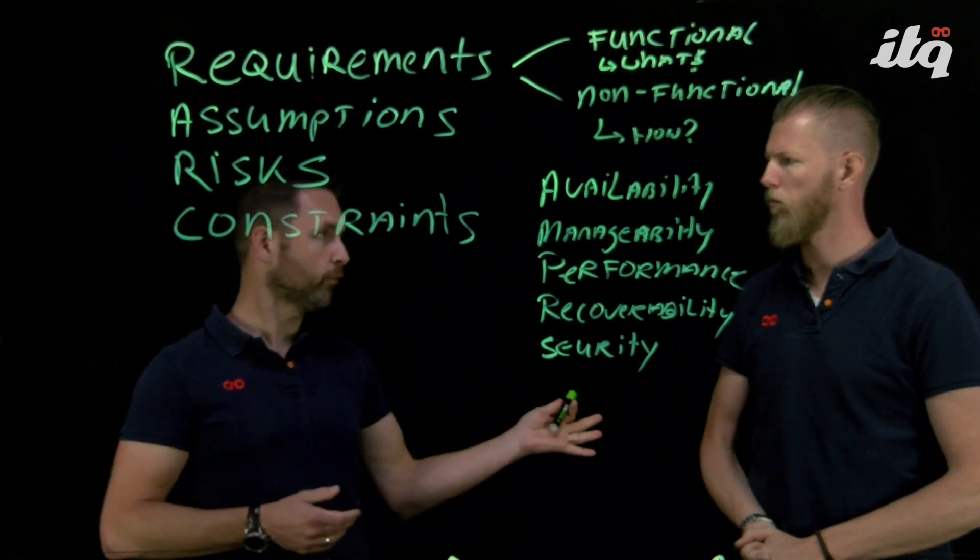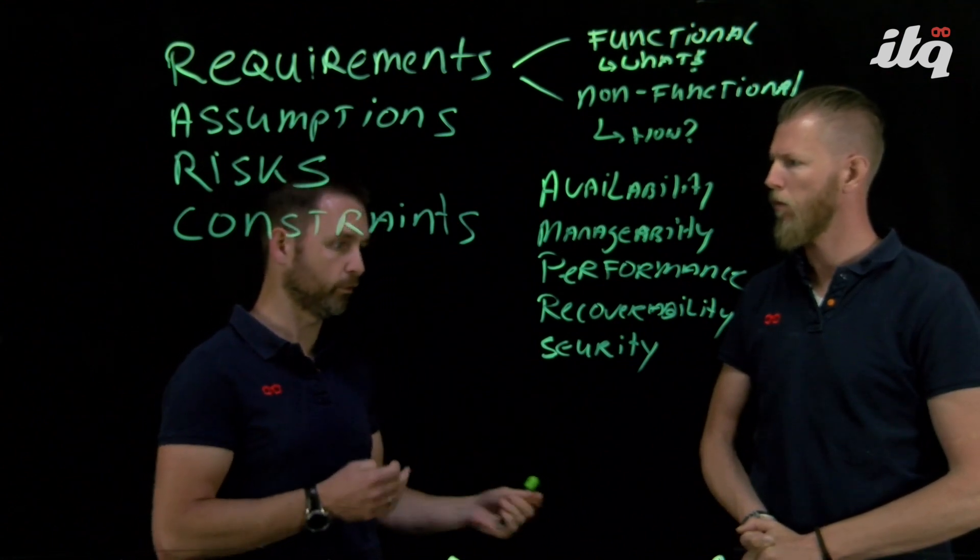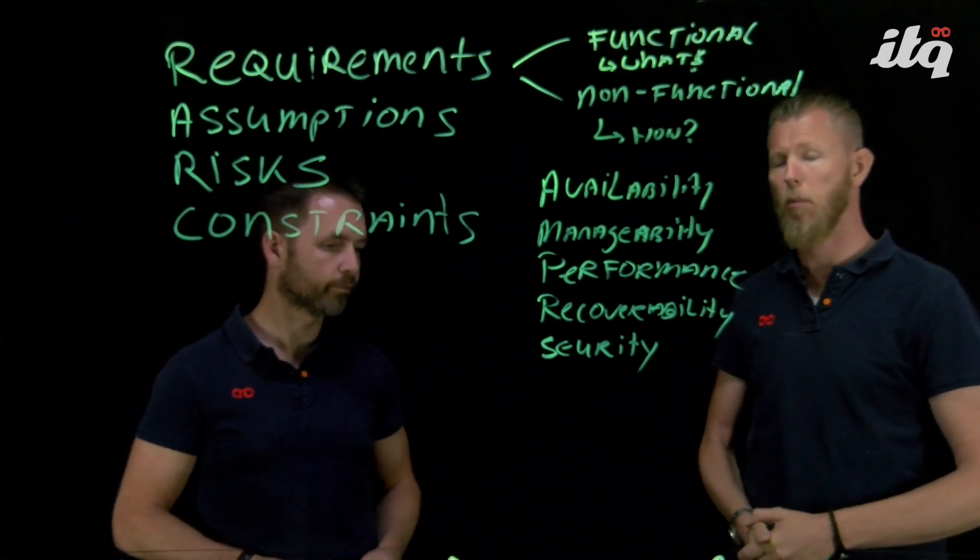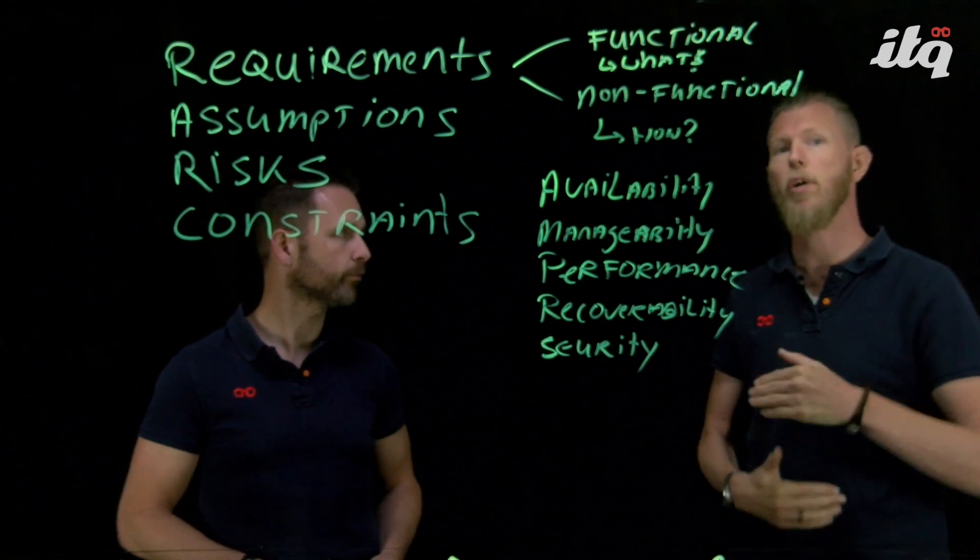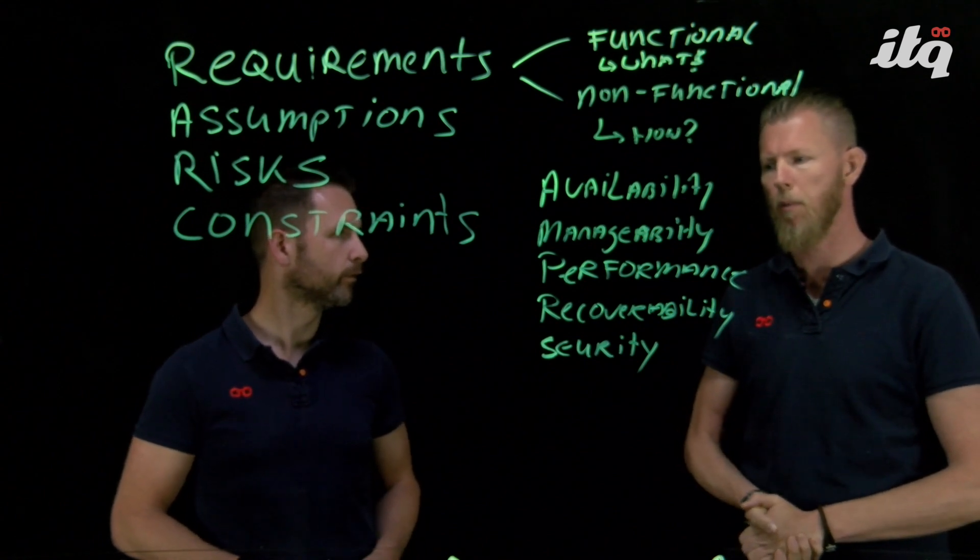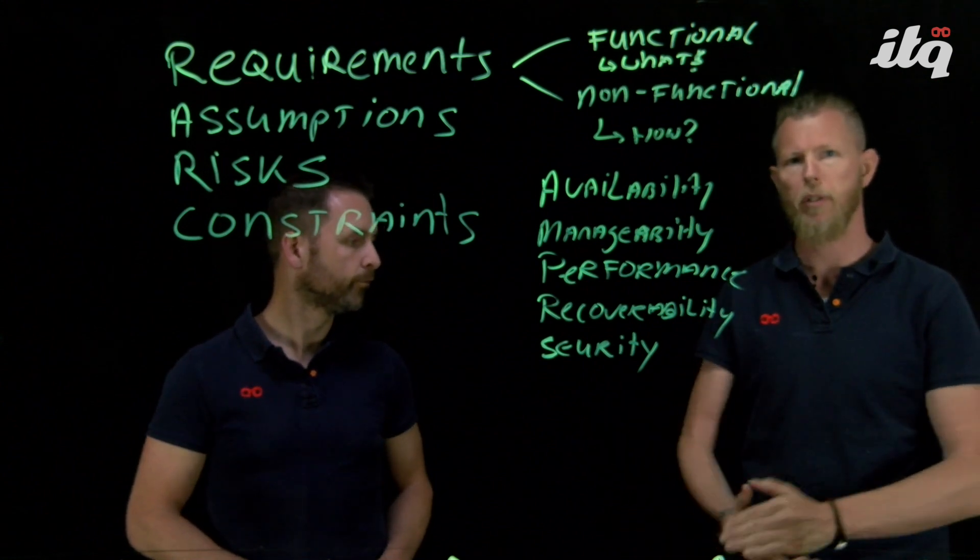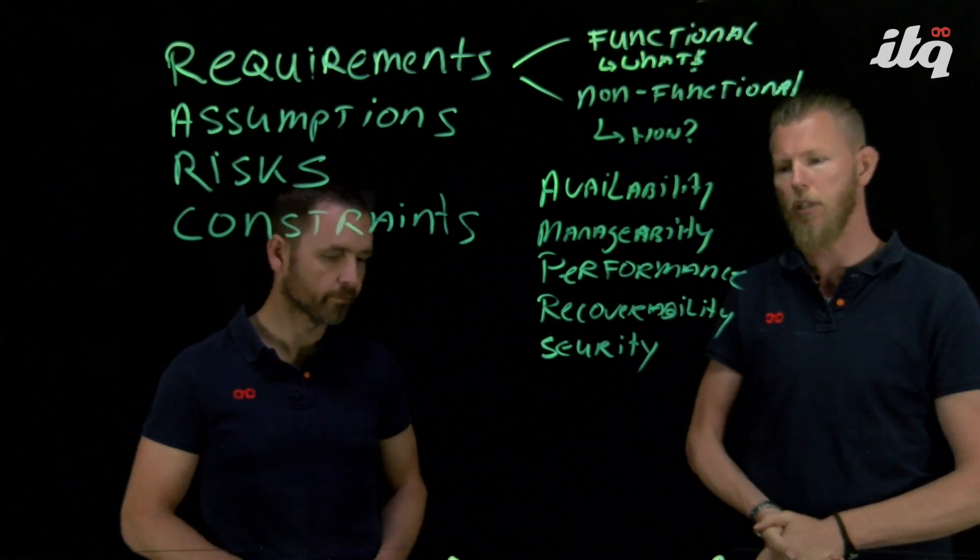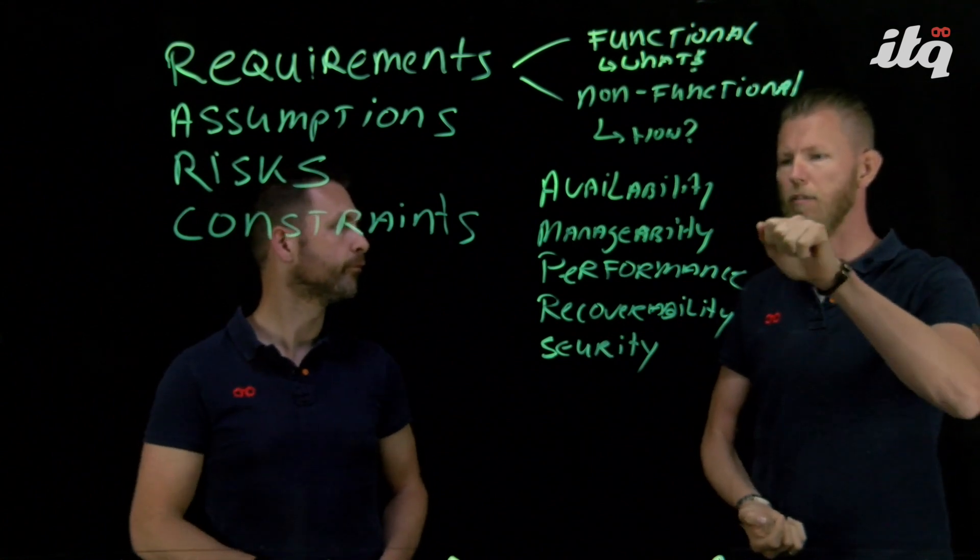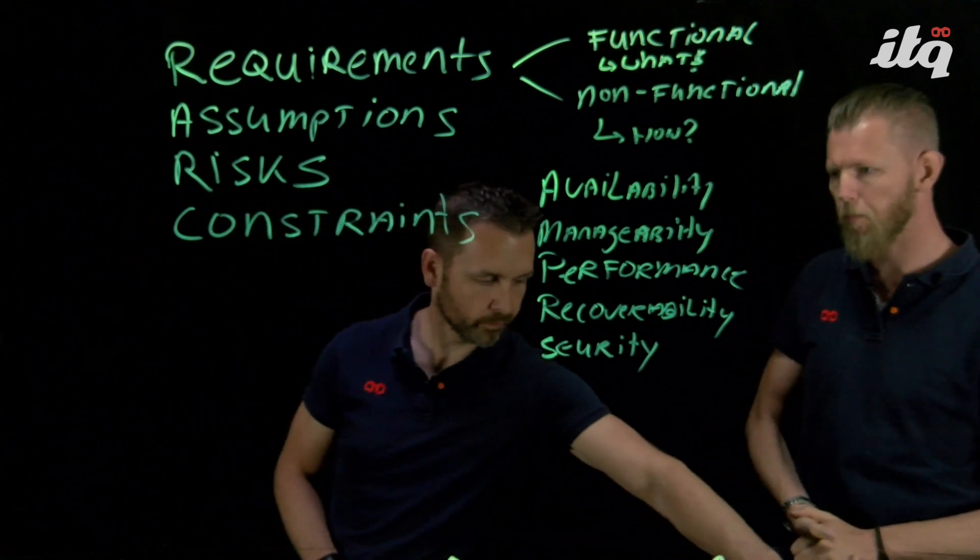From a data center or network and security perspective, these are the main categories that you can use to categorize your non-functionals. So Johan, just a question. If you're doing an inventory of functional requirements, how do you go about what should be included, what must be included? What's always a good thing is, obviously you start talking to the business, and the business will give you those requirements.